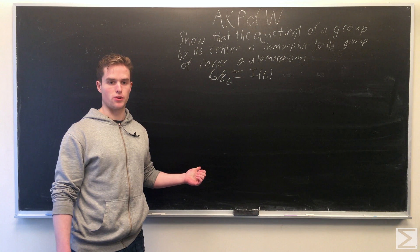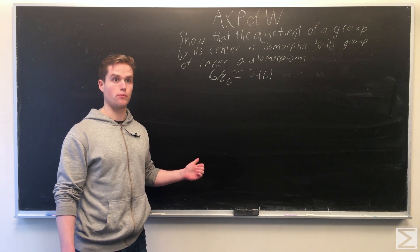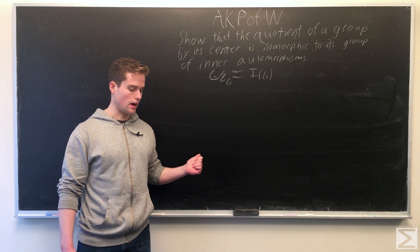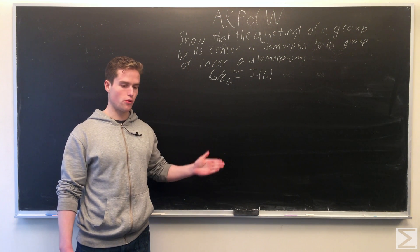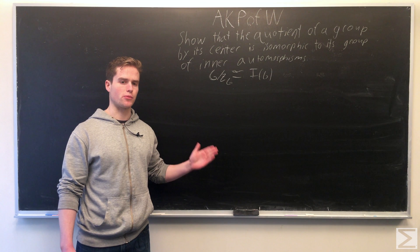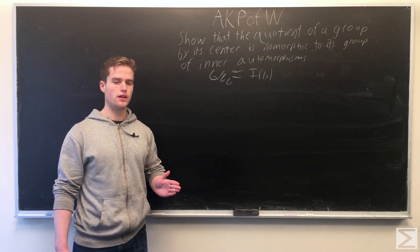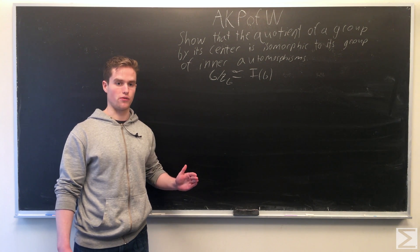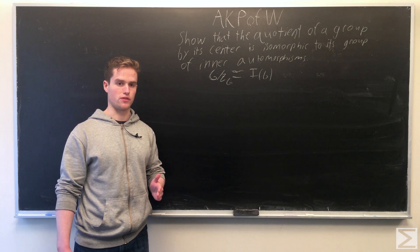To prove this, we'll use the first isomorphism theorem, which says that for a homomorphism from a group to its image, the quotient of the group with its kernel is isomorphic to its image.